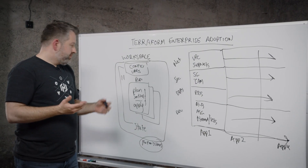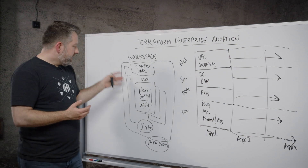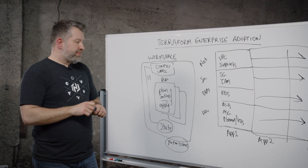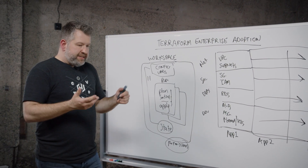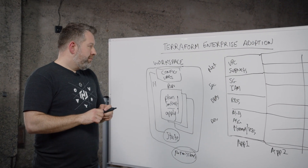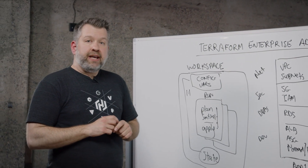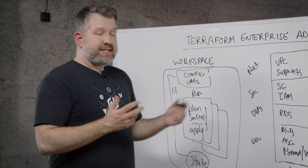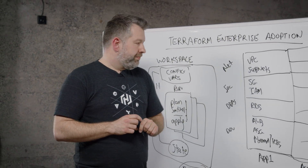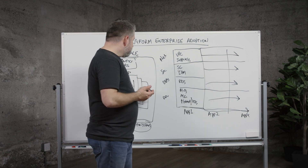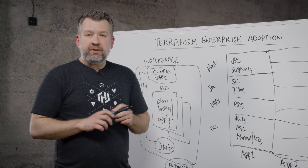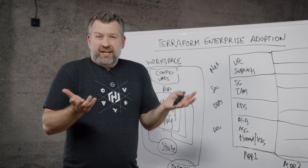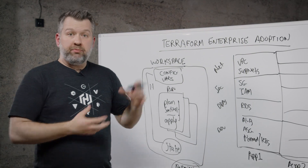The next concept is the state file and its deliberate one-to-one mapping between a state file and a set of configuration in a workspace. This leads to additional questions: what is the blast radius of different resources in my configuration? If I accidentally push a change to my VPC that takes it out, I lose everything in there. There's also the consideration of rate of change — I might push changes to application-level components ten times a day, but my network foundation is not going to change very often at all.